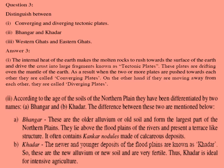Question 3: distinguish between converging and diverging tectonic plates. The answer is — the internal heat of the earth makes the molten rocks rush towards the surface and drives the crust into large fragments known as tectonic plates. These plates are drifting over the mantle of the earth. When two or more plates are pushed towards each other, they are called converging plates. On the other hand, if they are moving away from each other, they are called diverging plates.